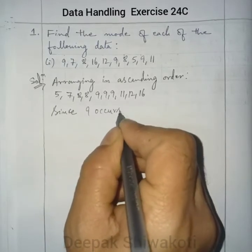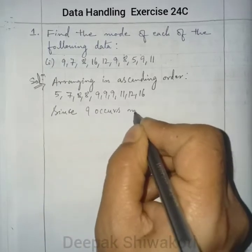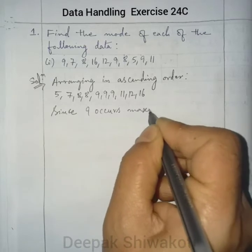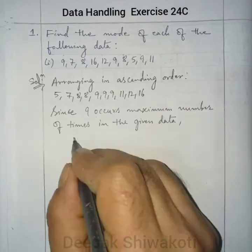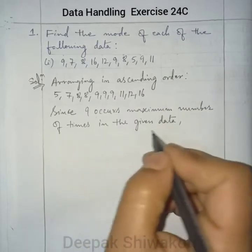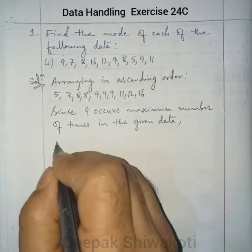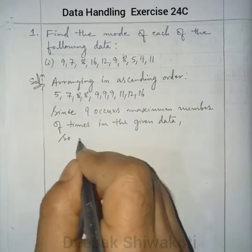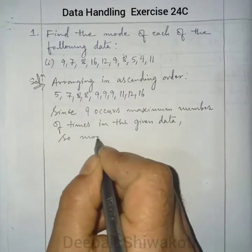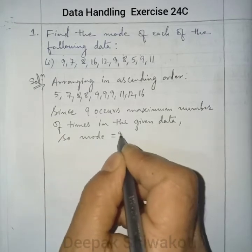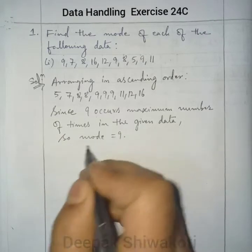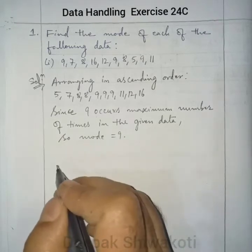Since 9 occurs the maximum number of times in the given data, mode is equal to 9. Now, question number 2.